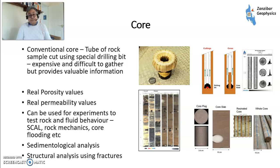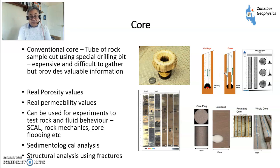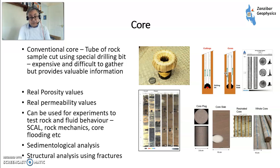Coring is effectively recovering a tube of rock — you can have whole core, resinated core slabs, or core plugs. You use a special coring drill bit and take up a solid core inside it. Core gives you real porosity and permeability values, and you can use it for experiments, testing rock and fluid behaviour, special core analysis, rock mechanics, core flooding, sedimentological analysis, and structural analysis using fractures — very valuable, but very expensive. You have to install a new special bit and normally can't use LWD simultaneously. You also need to decide exactly when to go in with the core bit, which takes time.